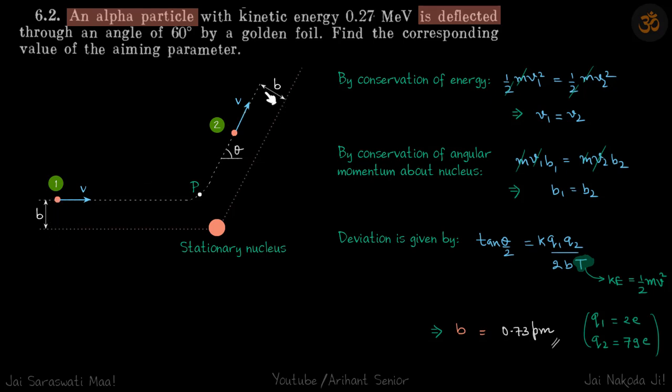Now this deviation is given by this formula: tan(θ/2) = kq₁q₂/(2bT), where T is the kinetic energy of the incoming particle. Here T = ½mv².